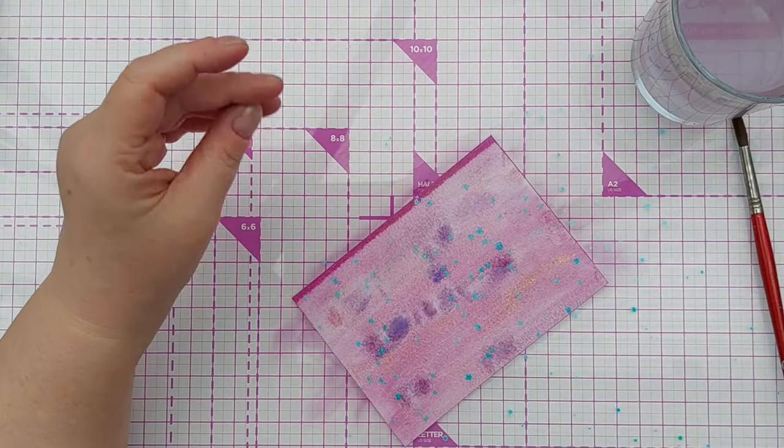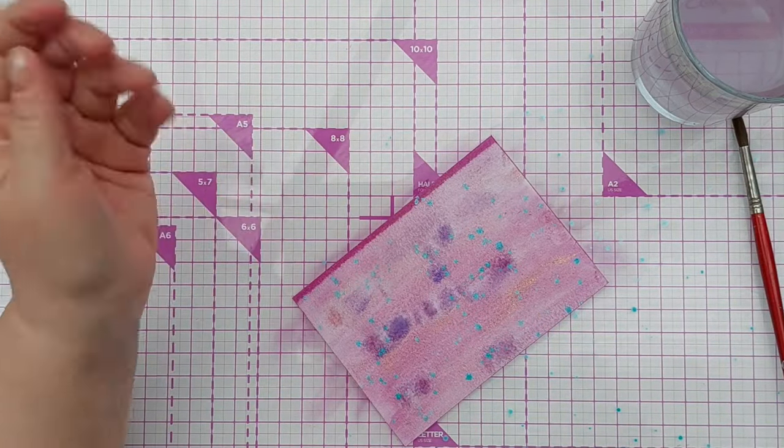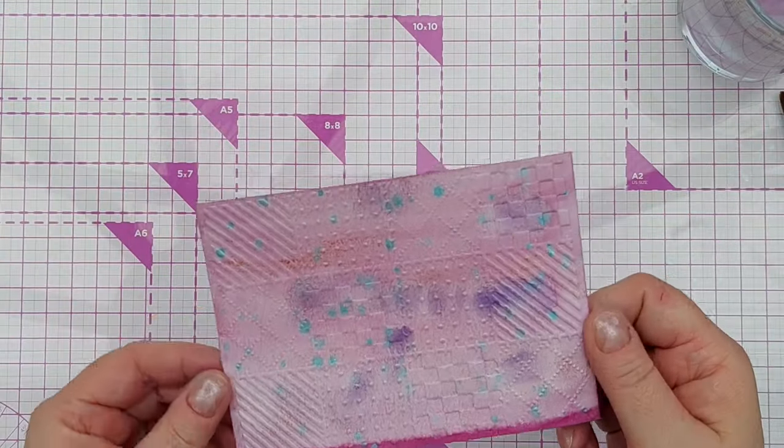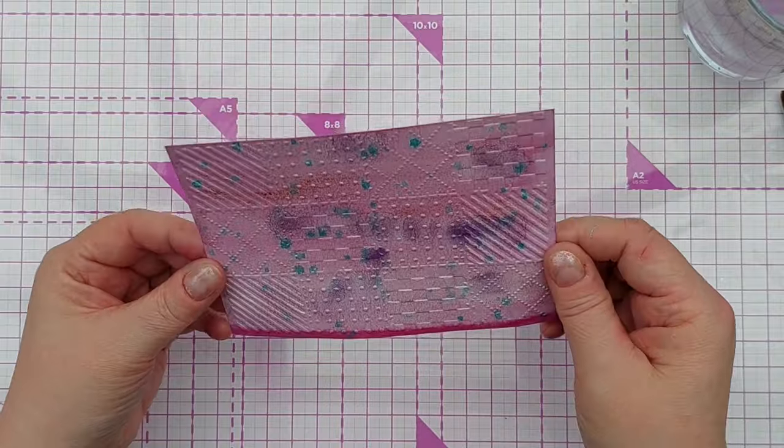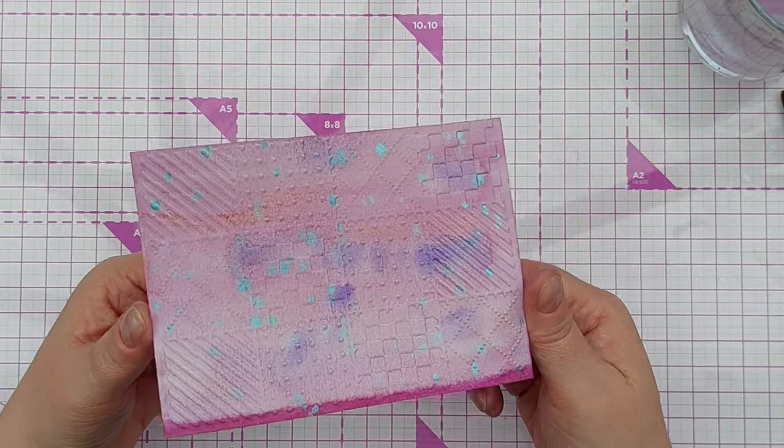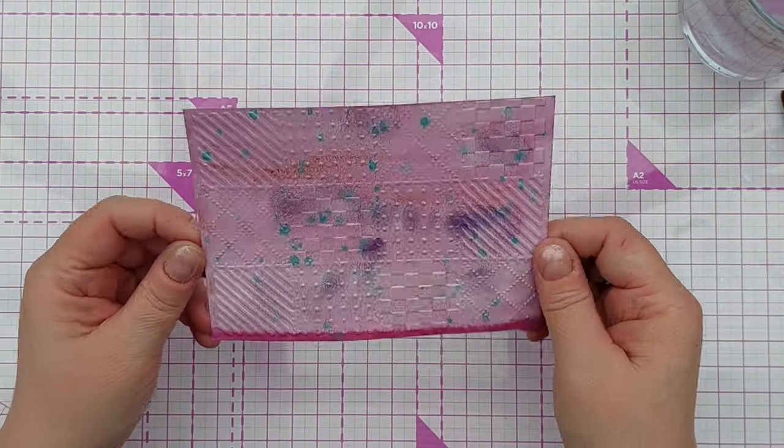So now I'm going to dry that with my hair dryer and then run it through my Cuttlebug with the embossing folder. So there we go, somewhat unusual looking bit of paper, but you get the picture. You can color your paper with pigment powders however you like and then run it through with an embossing folder.